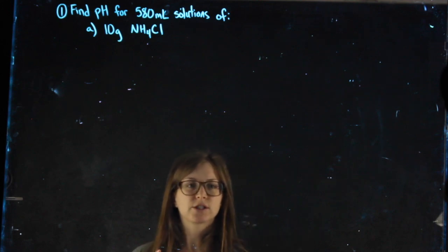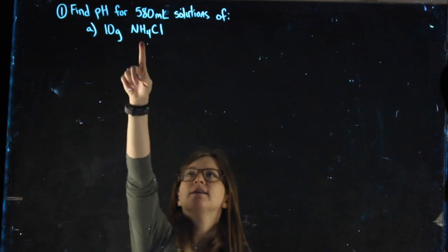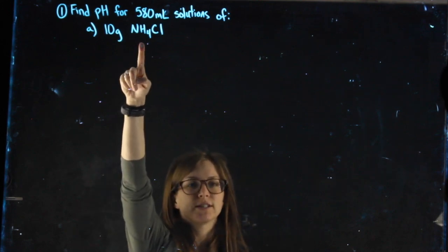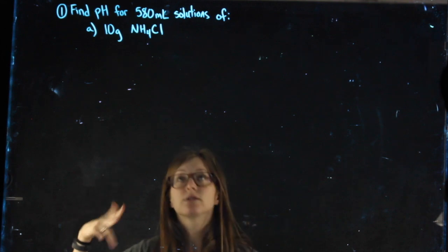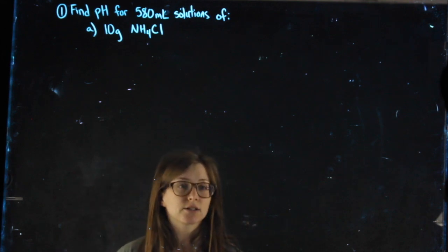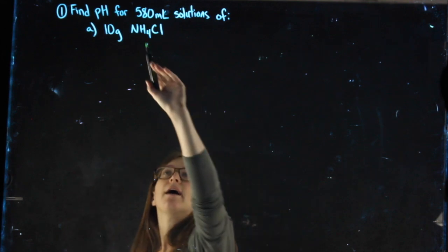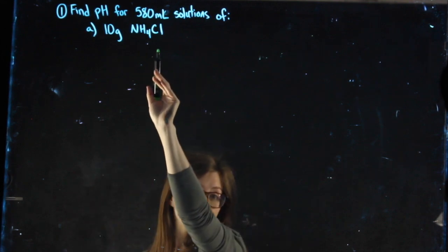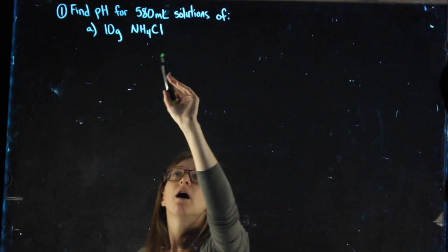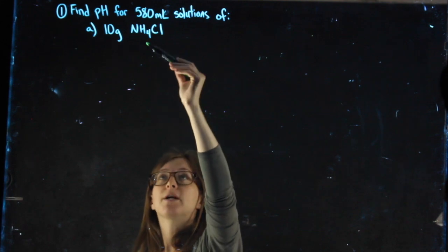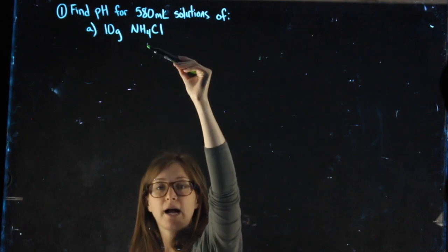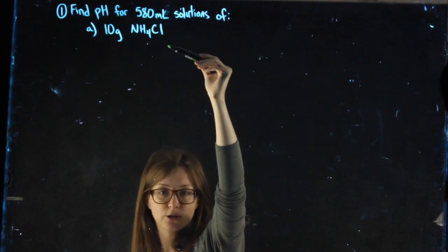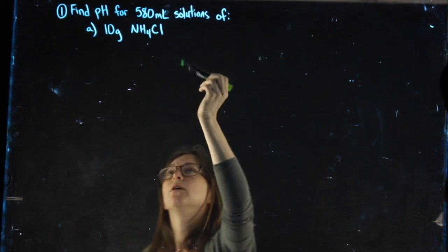To start this problem, the first thing I want to look at is if NH4Cl is an acid, base, or salt. It's a salt. I know that because it's not an acid or base, but also because NH4 is a polyatomic ion bonded to a non-metal.